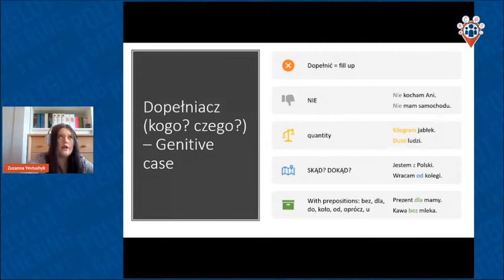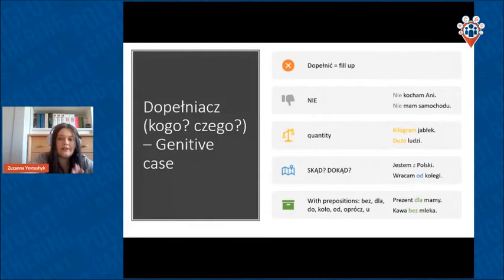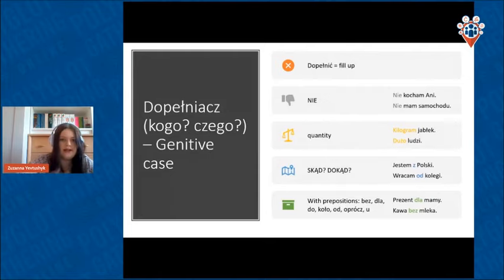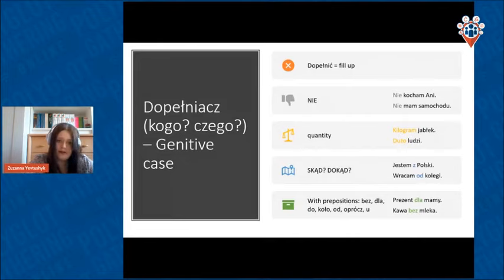There are prepositions always connected with genitive case: 'bez' (without), 'dla' (for), 'do' (to), 'koło' (near), 'od' (from), 'oprócz' (except), 'u' (by/at). For example, 'jestem u mojej mamy' — I'm at my mother's place. These prepositions always take genitive.